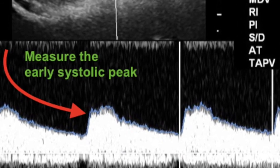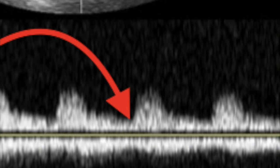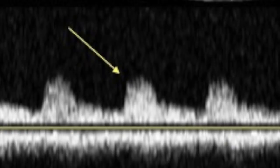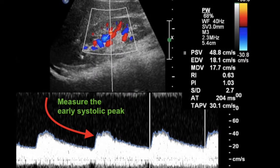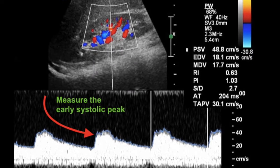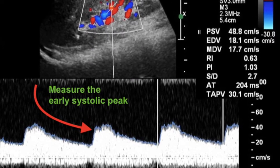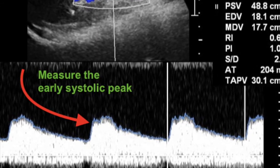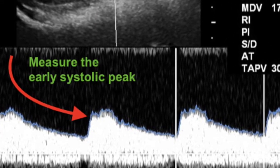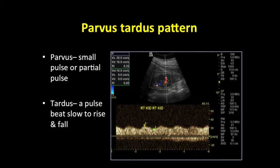The AT peak is measured from the starting point to the end point. As you can see here, the acceleration time is 204 milliseconds, which is more than 100 milliseconds. You can also appreciate visually that the pulse is slow to rise and acceleration time is increased.